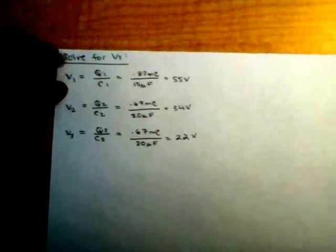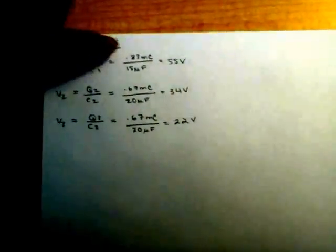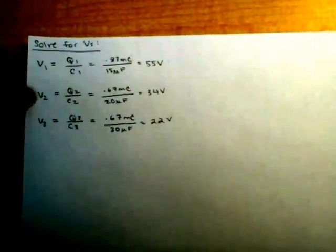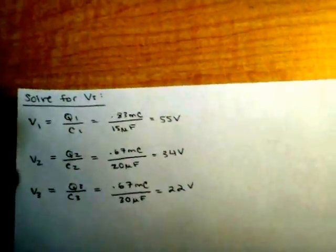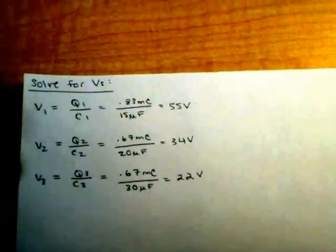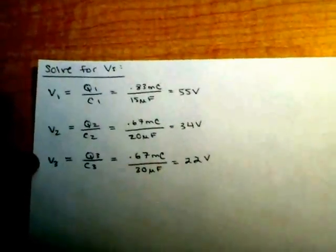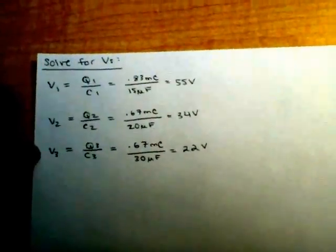Now all we have to do is solve for voltage, which is fairly straightforward. We just use V equals Q over C again, and we find that voltage 1 equals 0.83 millicoulombs divided by 15 microfarads, which equals 55 volts. V2 equals 0.67 millicoulombs divided by 20 microfarads, which equals 34 volts, and V3 equals 0.67 millicoulombs divided by 30 microfarads, which equals 22 volts.